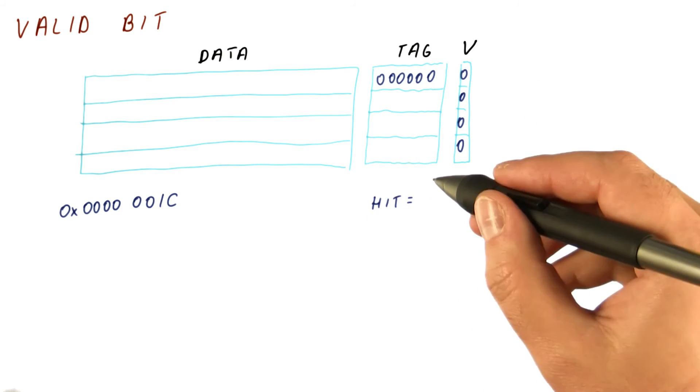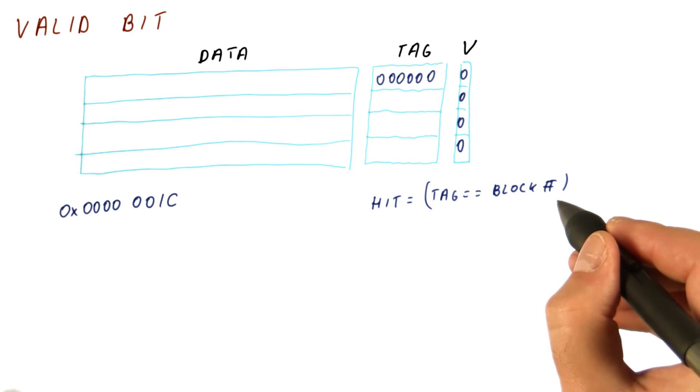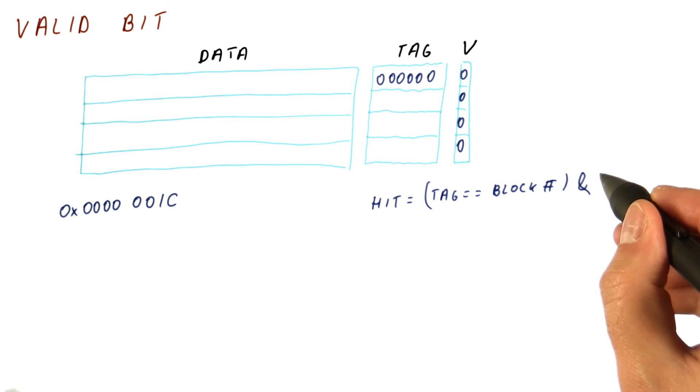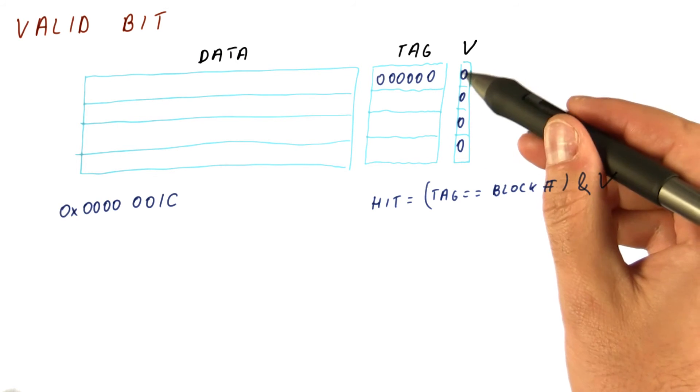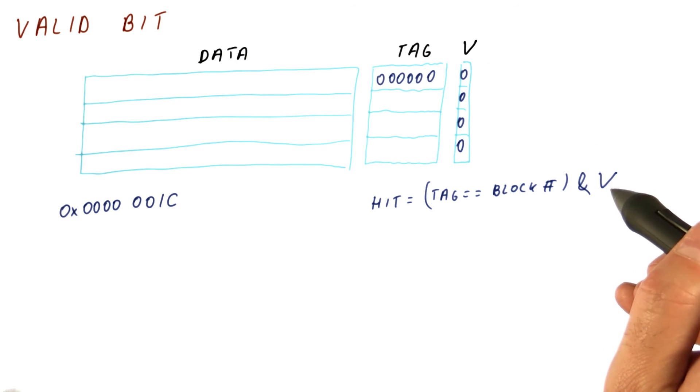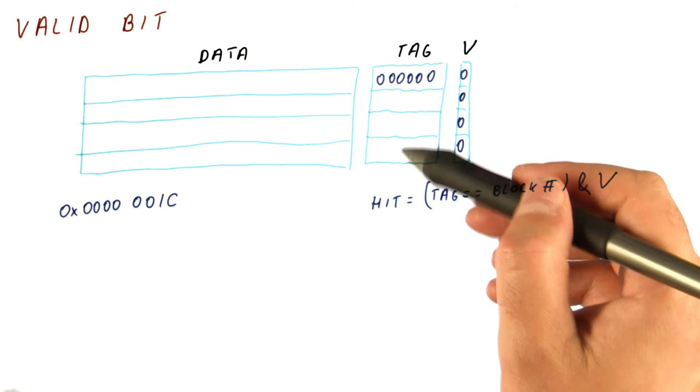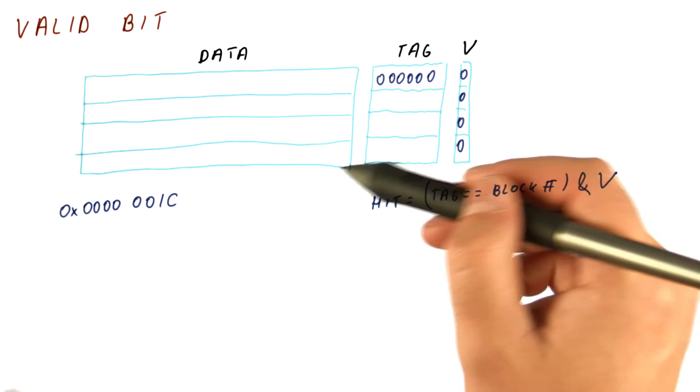So the hit condition is really that the tag matches our block number and the valid bit is set to one. By setting the valid bits to zero initially, we make sure that none of these can hit until real data is brought in.